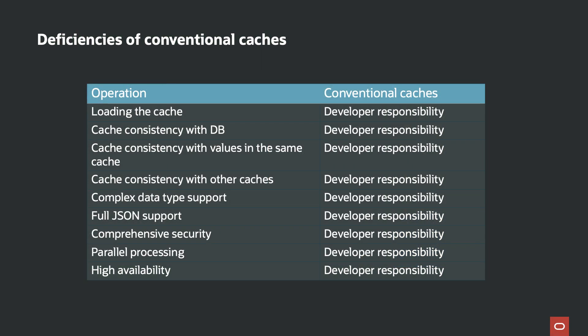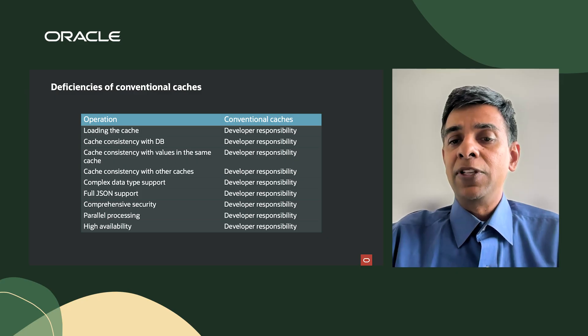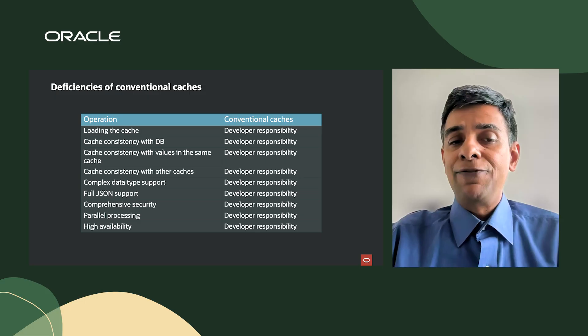Here's a summary slide showing deficiencies of conventional caches: loading the cache, cache consistency with the database, cache consistency with values in the same cache and with other caches, complex data type support, full JSON support, comprehensive security, parallel processing, and high availability. All of this falls under developer responsibility — developers have to write code to do all these operations and maintain that code over time.